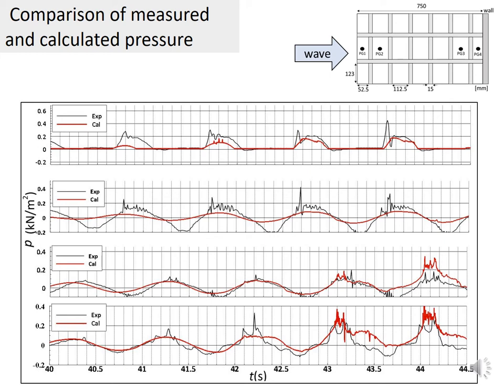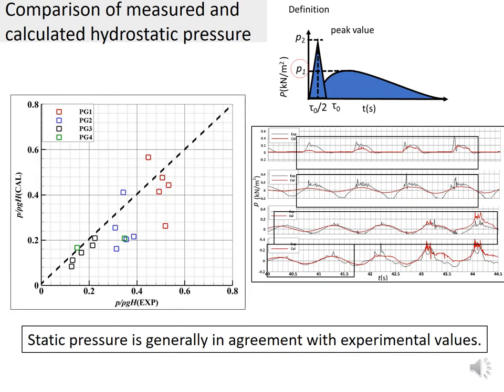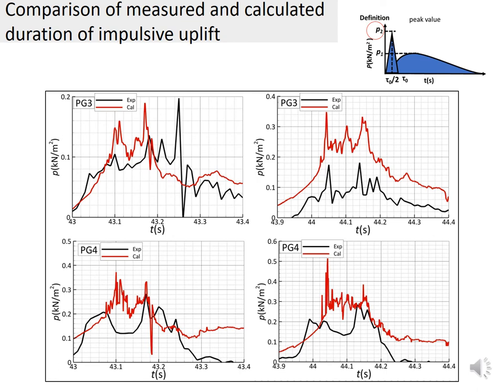On the other hand, in the numerical calculation, the hydrostatic pressure parts can be reproduced, but the impulsive wave pressure parts show poor reproducibility. The following is a quantitative evaluation of the hydrostatic pressure. It can be seen that the values match well since the pressure value is affected by the water level in the hydrostatic pressure parts. That part has been reproduced.